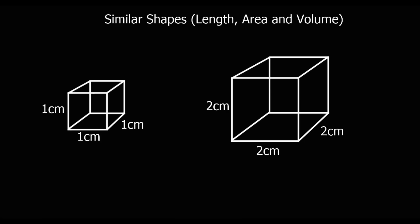The scale factor for length, area, and volume is not the same. In this example I've got two cubes. The length scale factor — going from 1 to 2 — is 2. So to get to the big shape, you multiply by 2, and divide by 2 to go back.